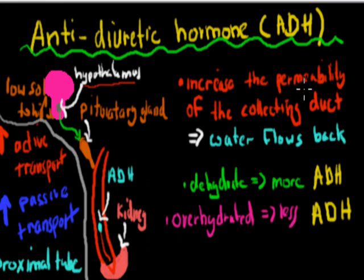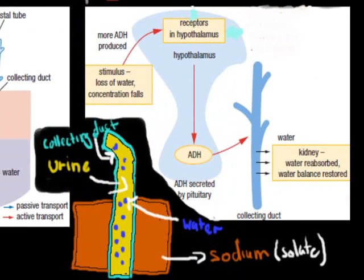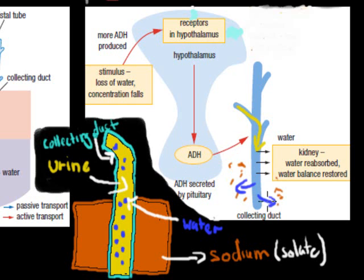What ADH actually does: it increases the permeability of the collecting duct, which means water flows back. You can imagine urine traveling down the collecting duct — urine can be dilute or concentrated. Normally, even though there's lots of salt around the collecting duct, water can't flow through because the walls are shut — there are no openings. Water can't penetrate. But when ADH is released because water levels are low, it goes to the collecting ducts and actually opens them up. Once open, water can flow from low solute to high solute.